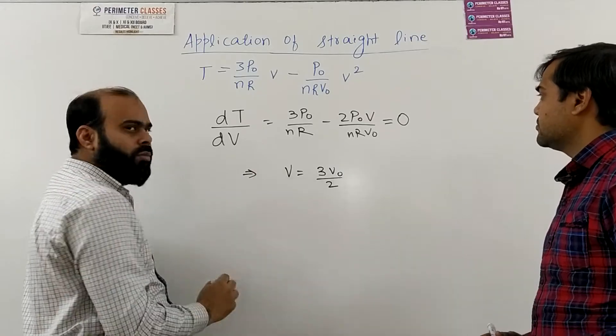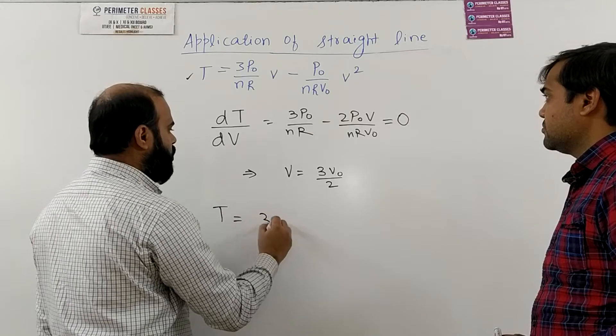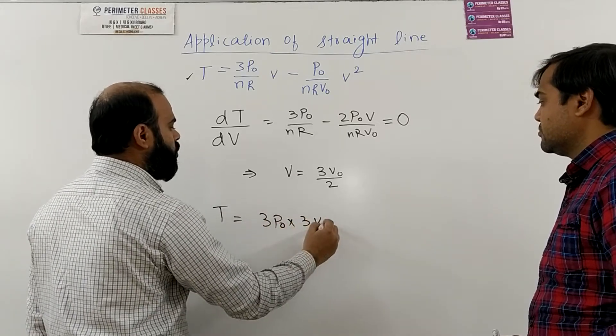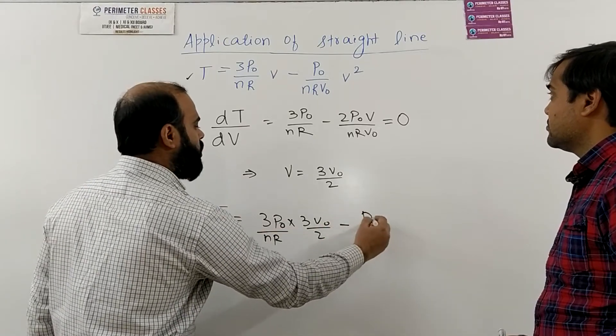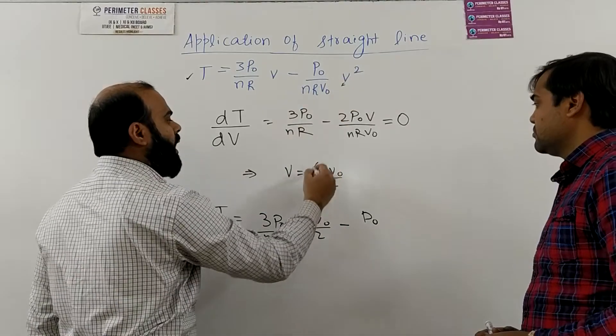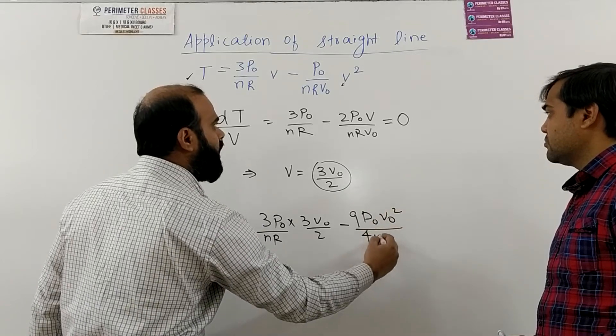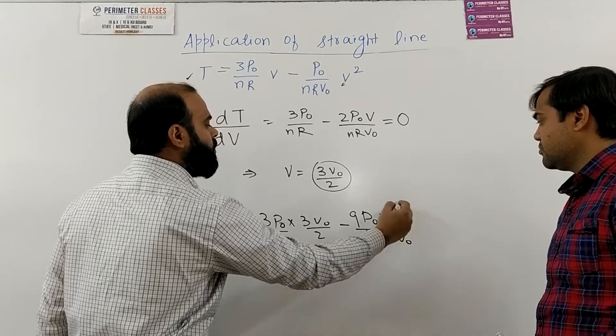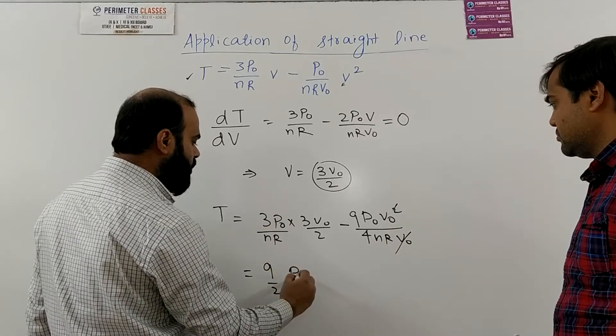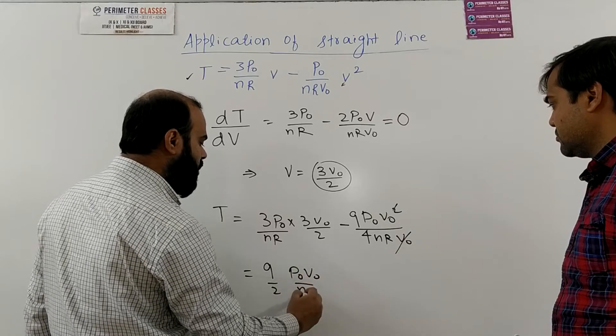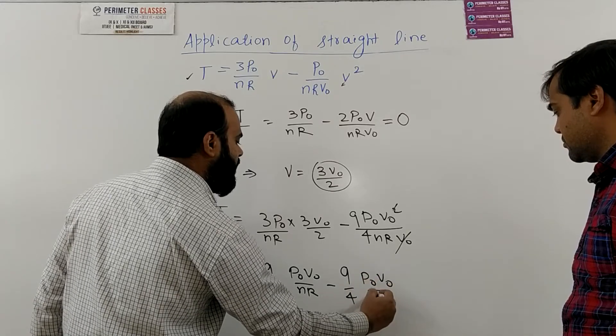So this is the volume at that point. So what should be the temperature? Temperature would be 3P0 into 3V0 upon 2 and here it is nR minus P0 and when you put V as 3V0 by 2 this will become 9V0 square upon 4nR V0. This would be cancelled and here we will get 9 by 2P0 V0 by nR. Here we will get 9 by 4P0 V0 by nR.